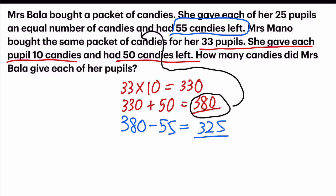That remaining 325 candies was given to her 25 pupils. So 325 divided by 25 equals 13.